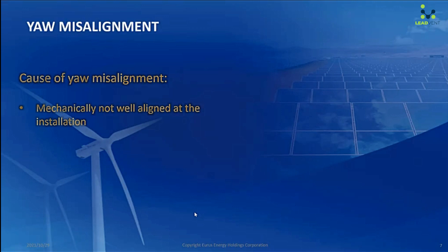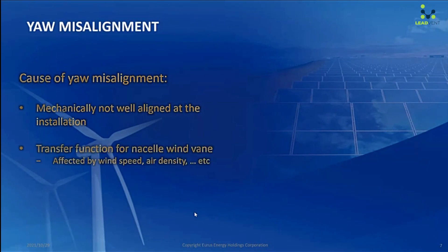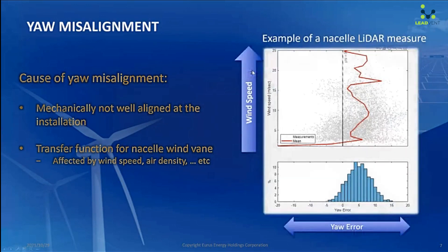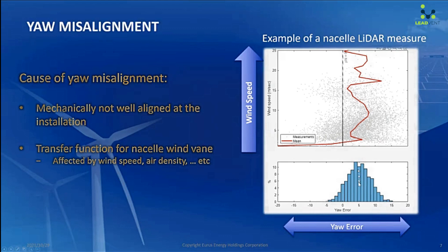The causes of misalignment can be mechanical misalignment installed at the beginning. Another one is the transfer function of the wind vane, which is complicated because it can be affected by wind speed and air density. For example, this is a measurement from a nacelle lidar. The bottom graph shows the distribution of wind direction relative to the nacelle — in this case the misalignment is about five degrees. Looking at the top figure showing wind speed, the misalignment angle is depending on the wind speed in this case.